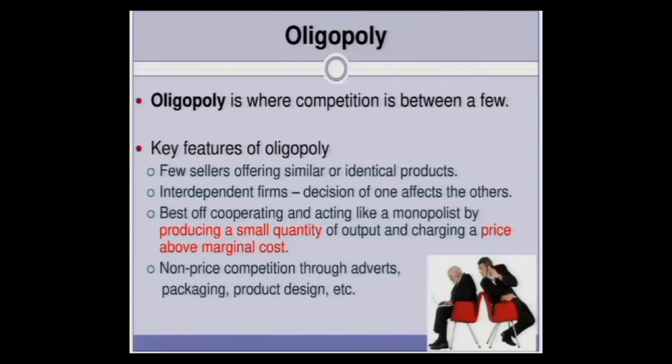Competition in oligopoly is between few large firms — usually two or three. I shouldn't say two because that's a duopoly, but oligopoly is between few large firms. When the number of firms in the market increases, it's not oligopoly anymore because cooperation and coordination is not possible where there are too many firms.